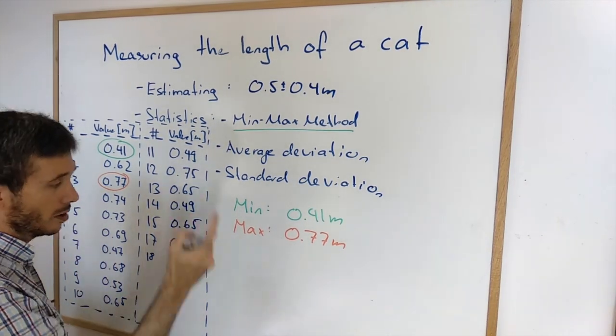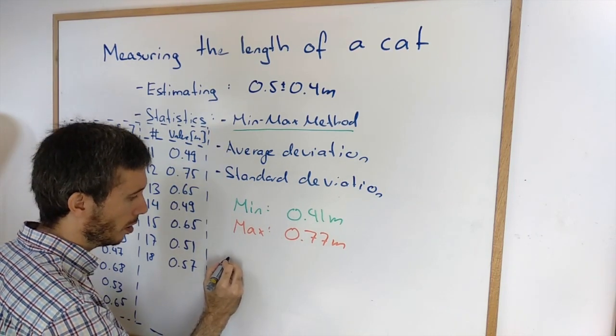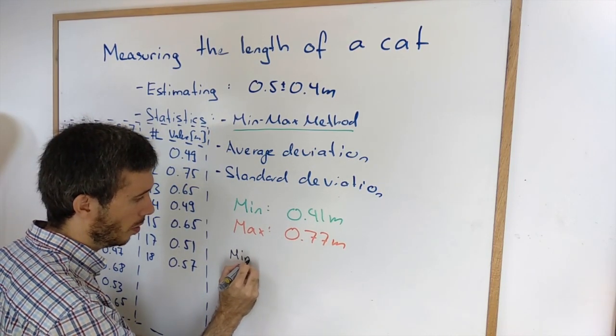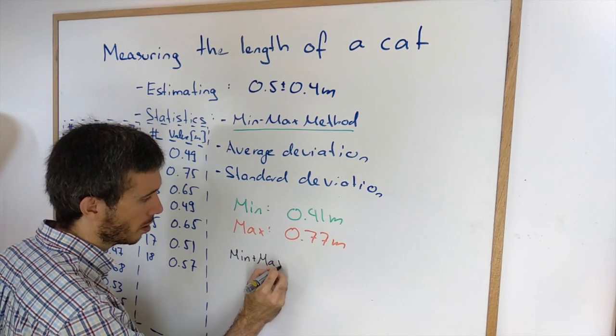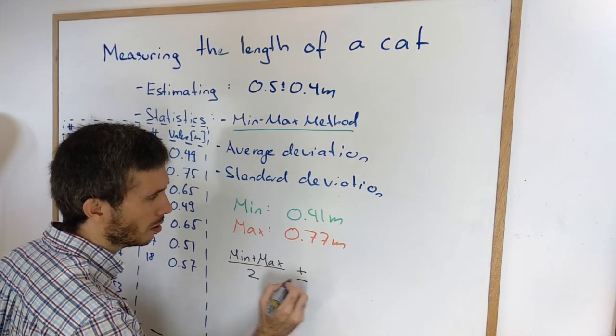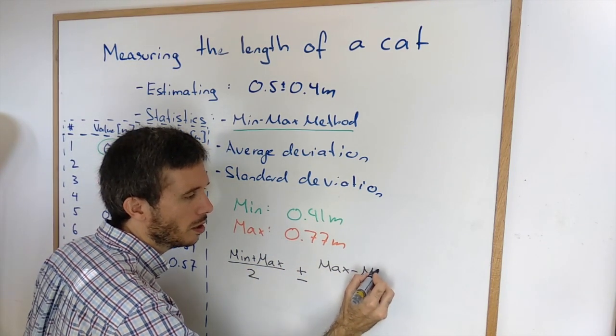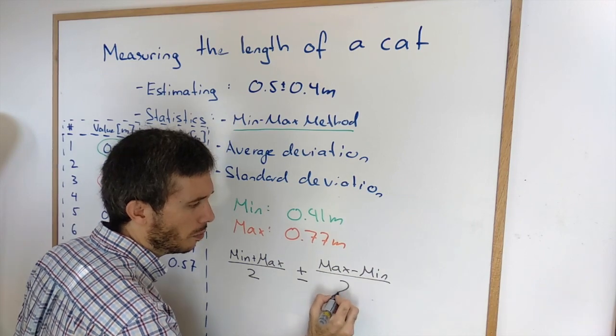The formula says we're going to calculate the value itself as simply the average of the min plus the max divided by 2. And then the uncertainty, we take the difference. So max minus min, and we divide it by 2.